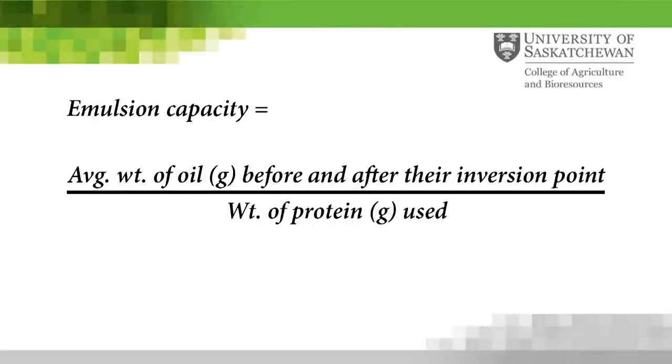To calculate the emulsion capacity, take the average weight of oil added before and after the inversion point and convert it to grams of oil per gram of protein based on the protein concentration used.